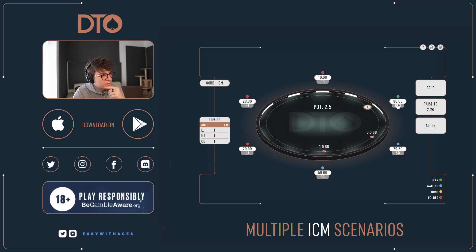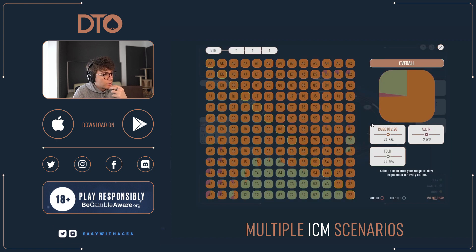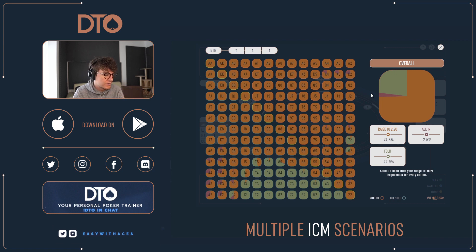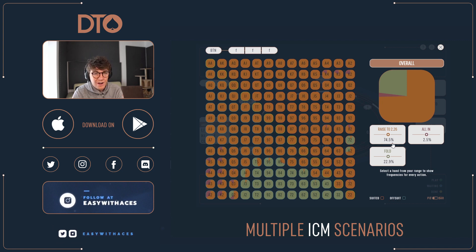So we look at the range from the button. In general in chip-EV I'd say you're opening approximately 55% on average, depending on who's in the blinds and stack depths. But as you can see here, we're opening 74.5% — already far more than we would in almost any chip-EV situation, unless there are two extremely weak players in the blinds.